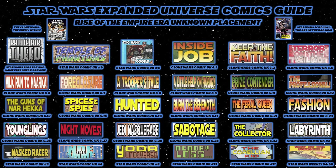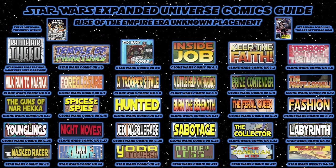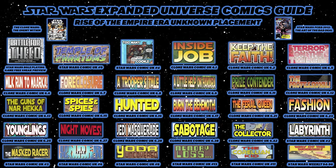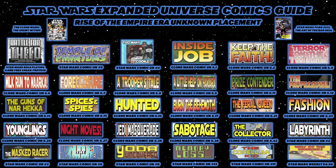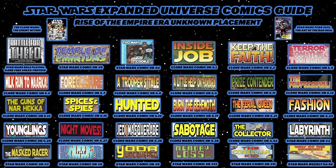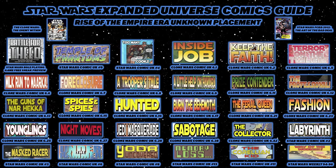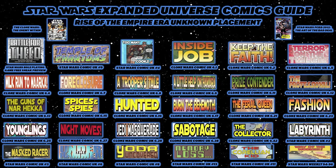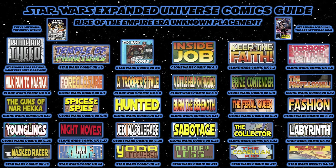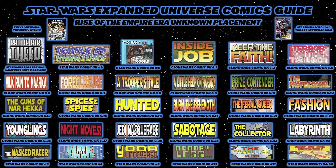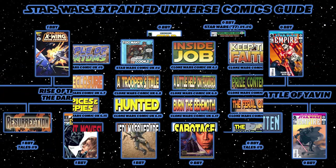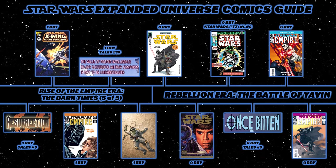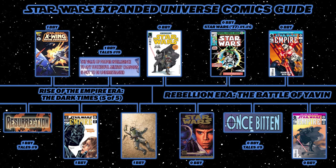Now that we've wrapped up the Rise of the Empire era, there are a few stories with unknown placement on the timeline. They're all grouped on the graphic — you can take a screenshot and figure out the best placement, or just read them at the end of the Rise of the Empire era. This leads to the 2013 free comic book day issue Star Wars: The Assassination of Darth Vader.